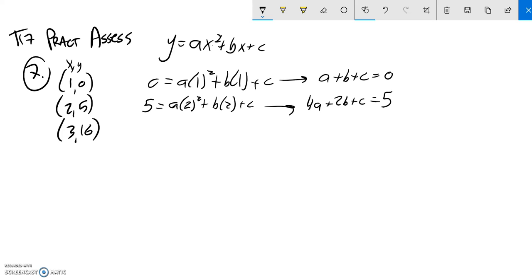And then this third one, when x is 3, y is 16. So 16 equals a times 3 squared plus b times 3 plus c.